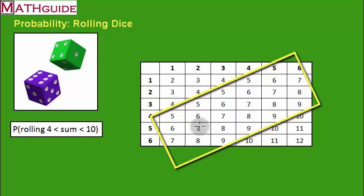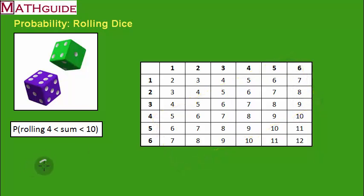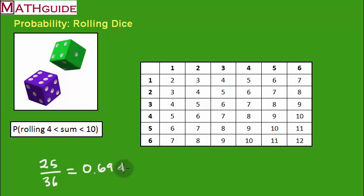Counting all the possible outcomes between the parallel lines: 1, 2, 3, 4, 5, 6, 7, 8, 9, 10, 11, 12, 13, 14, 15, 16, 17, 18, 19, 20, 21, 22, 23, 24, 25. There are 25 sums between 4 and 10, not including 4 and 10, out of 36 total. This fraction cannot be reduced. Dividing gives 0.694 repeating fours, or almost 70% — that's 69.4%. So there's a 69.4% chance that when rolling two dice the sum will be between 4 and 10, not including 4 and 10.